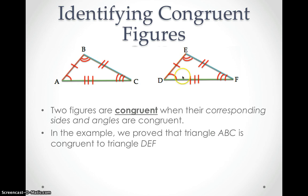In the example that we just completed, we proved that these two triangles are congruent to each other. So triangle ABC is congruent to triangle DEF. And the way that we would write that using symbols is just like this.